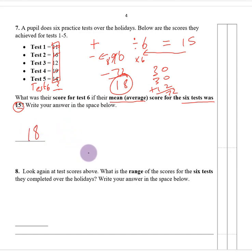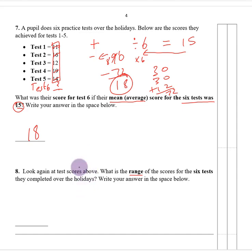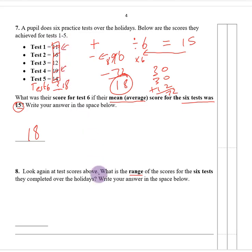Part two. What is the range of scores for all 6 tests? Range is the biggest score take away the smallest. Now we have all six scores including 18. The smallest score was 11 and the biggest was 19. So 19 minus 11 leaves us with 8.